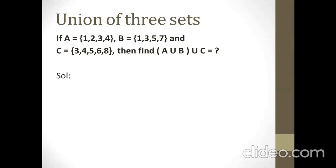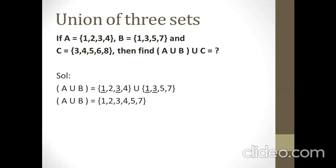First we will find A union B, which is written in round brackets. For A union B, first we have to write all the elements of set A, then the symbol of union U, then all the elements of set B. As you know, in A union B we have to write all the elements either belonging to set A or to set B, but only once. As you can see, 1 and 3 are common to both sets, so we will write them only once.